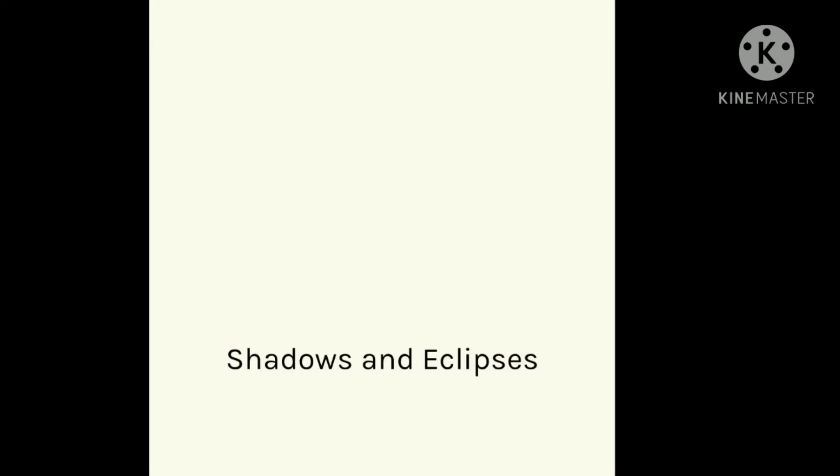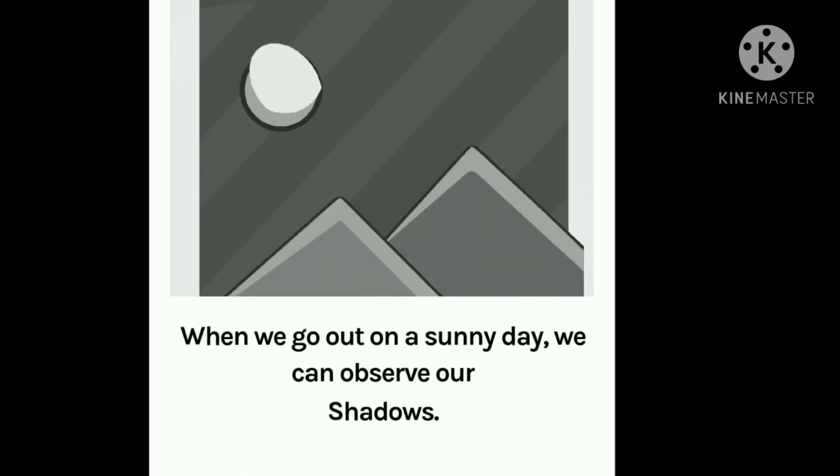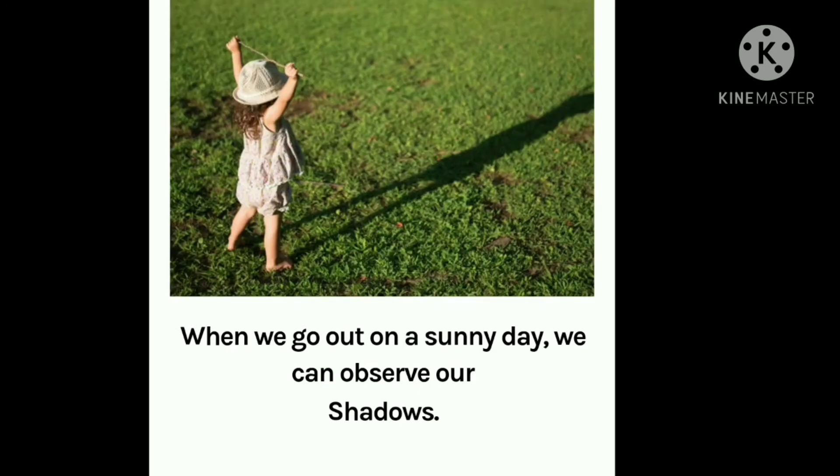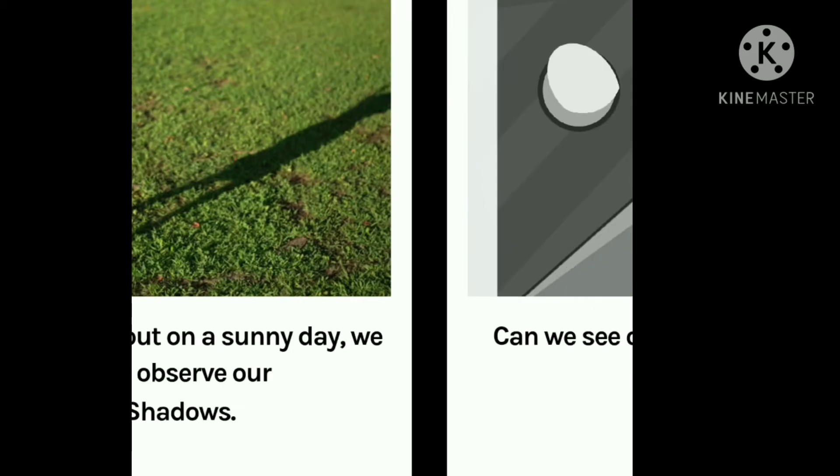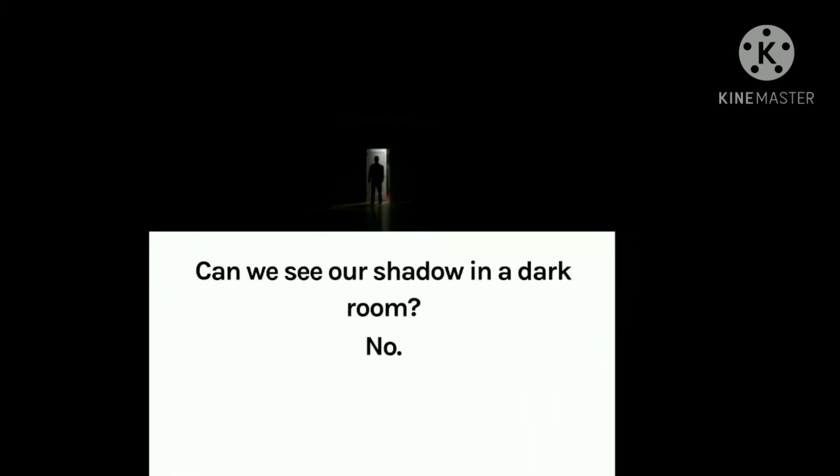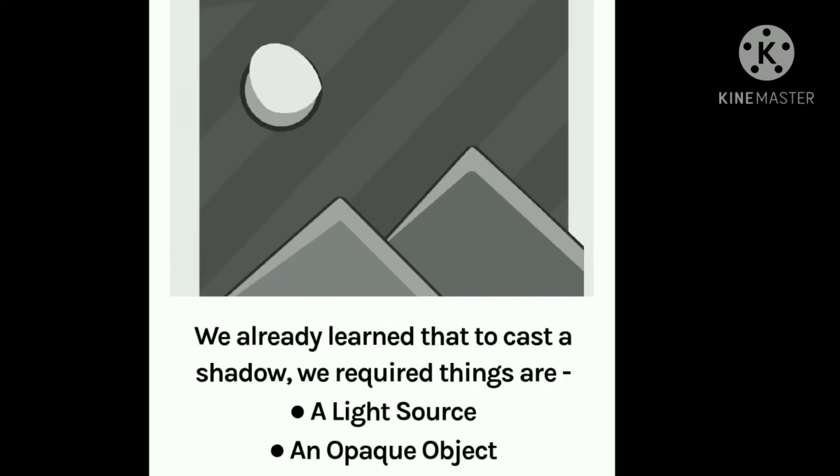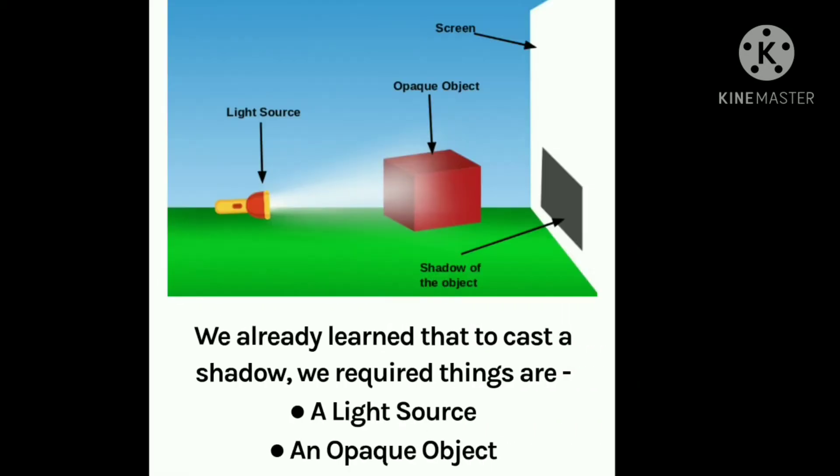So just learn something more about the shadow. When we go out on a sunny day, we observe our shadow. Can we see our shadow in a dark room? No. We already learned that to cast a shadow, we require things like a light source, an opaque object and a screen.